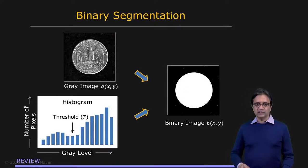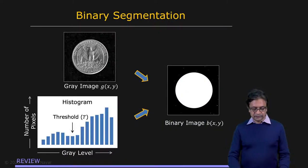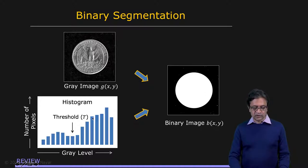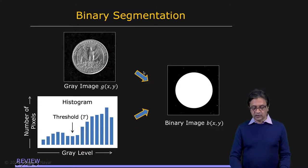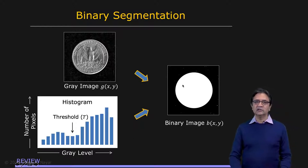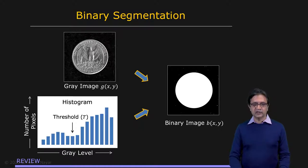In the context of binary images, we saw how we can take a simple image such as this one — you have an object on a uniform background. We can compute a histogram of the image, find an appropriate threshold, and then by thresholding the original image, you end up with a binary image. This binary image is the segmentation we're looking for in this case. So that's a very simple case.